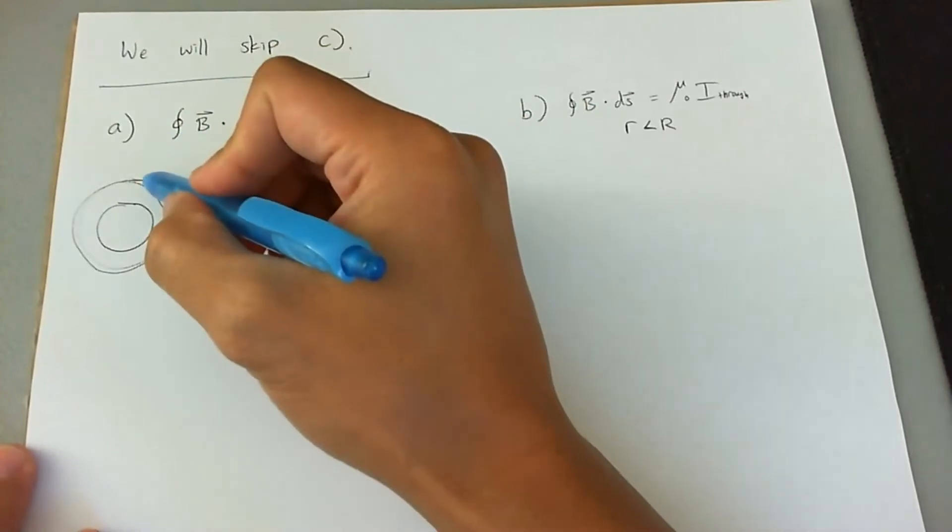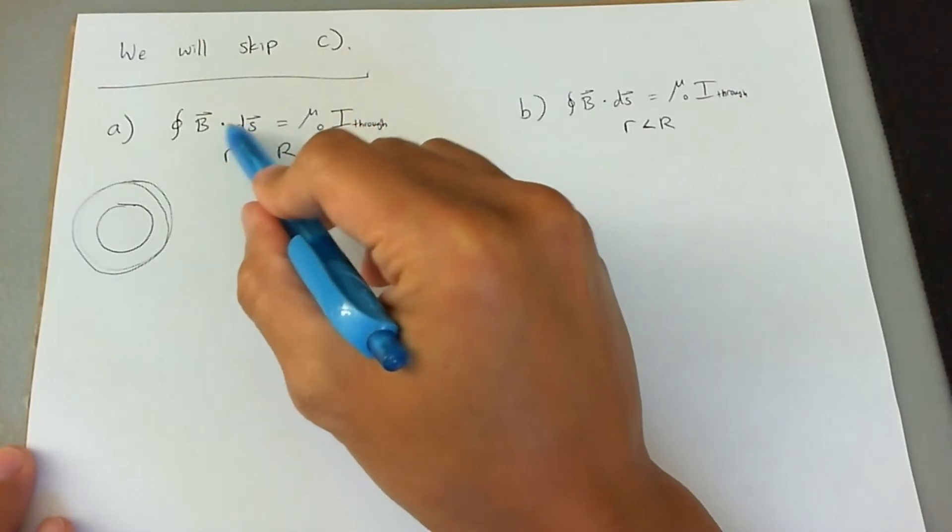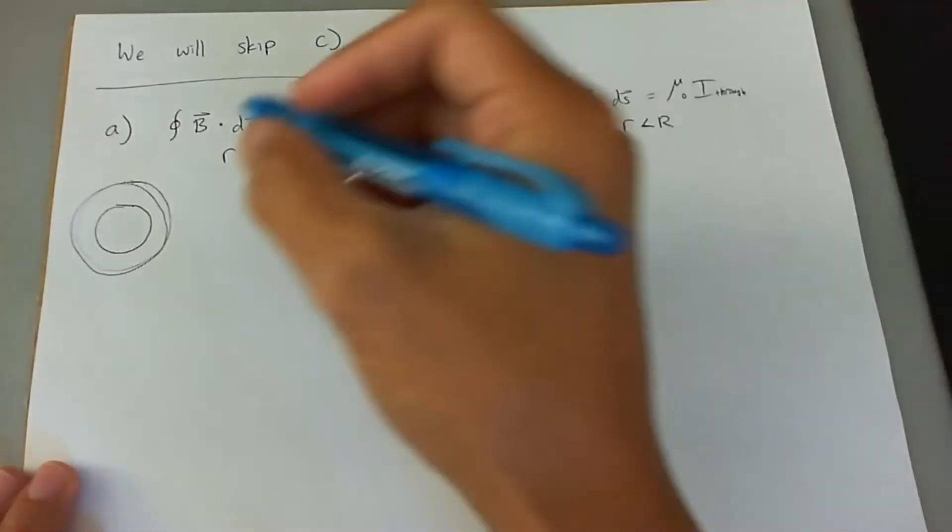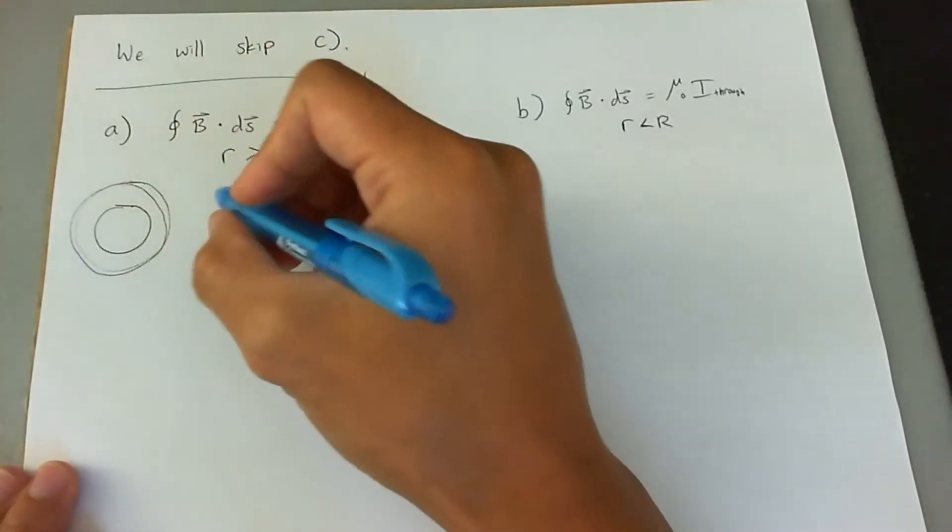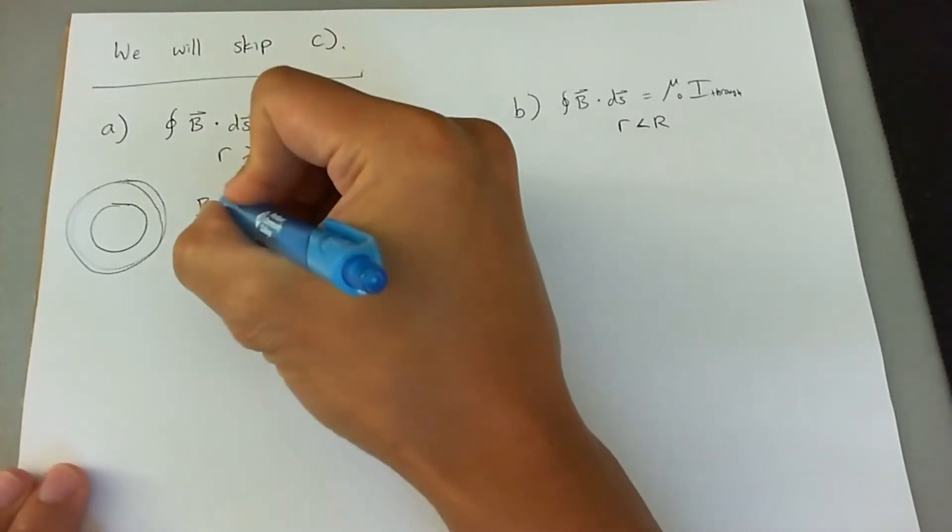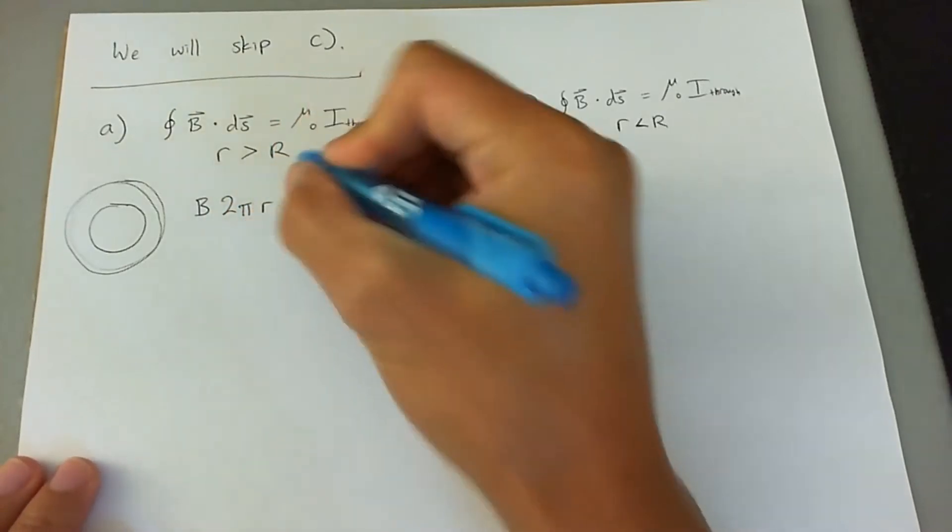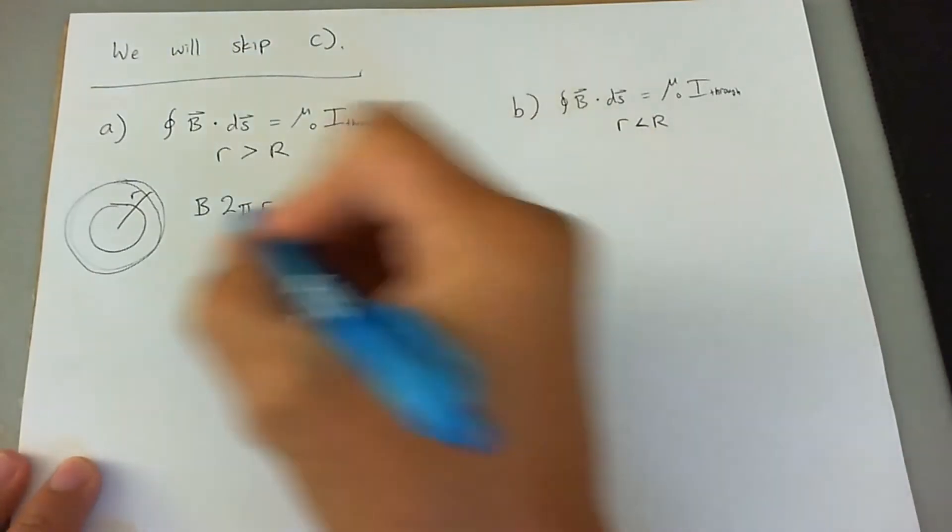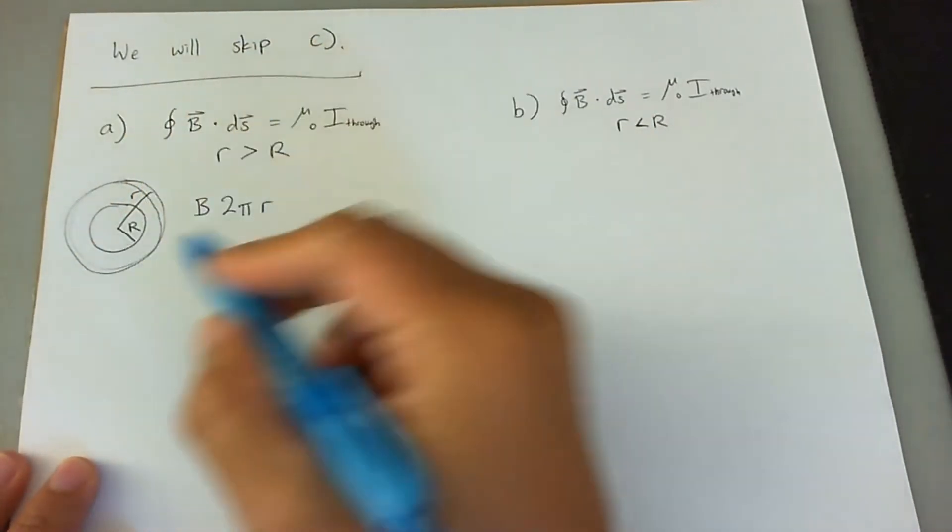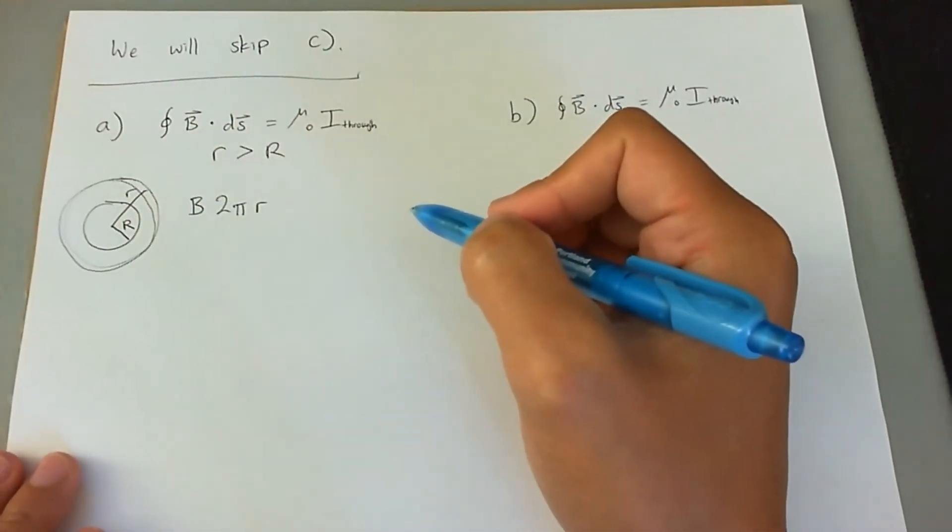So if I were to take an Amperian loop around the cylinder, then the B field is going in the same direction as that Amperian loop. So that dot product is fulfilled. So we're going to go ahead and say this line integral around this closed loop is B times the circumference of this Amperian loop, which is 2 pi r. R being some arbitrary distance from the center.